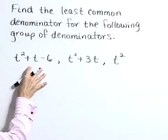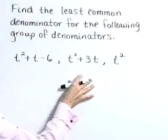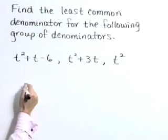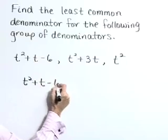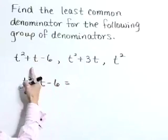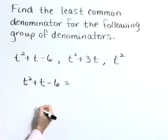So let's assume that these are actually denominators of fractions. We want to find a least common denominator. I'm going to rewrite this t squared plus t minus 6 in factored form. We need to see each of these in their factored form to do so.